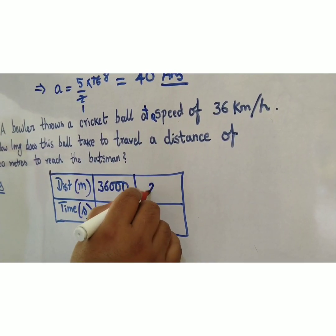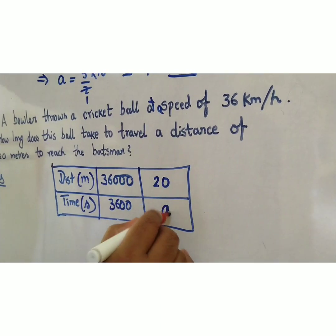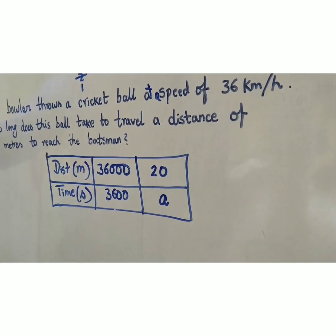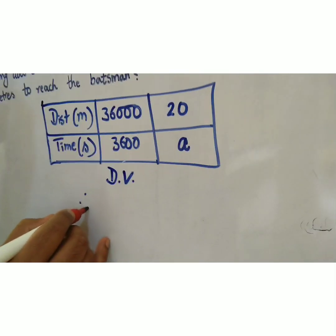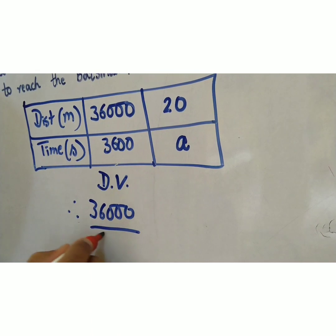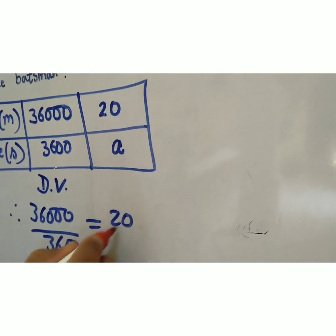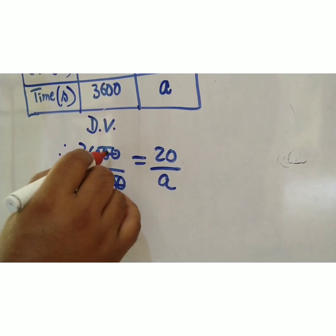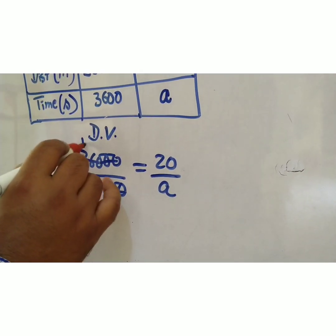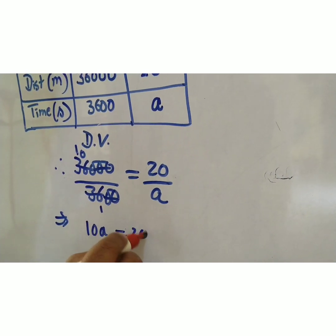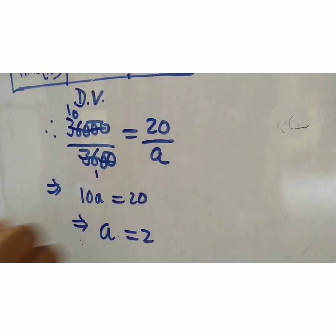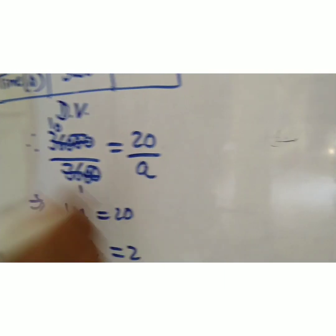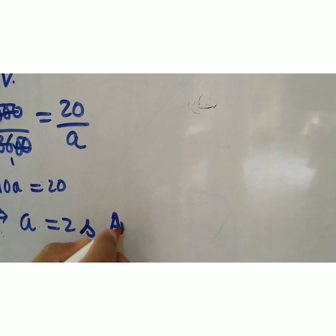We have to find how long the ball takes to travel a distance of 20 meters — suppose this time is A. Distance and time are in direct variation, therefore 36,000 divided by 3,600 is equal to 20 divided by A. The zeros cancel giving 10A = 20, so A is equal to 2 seconds.